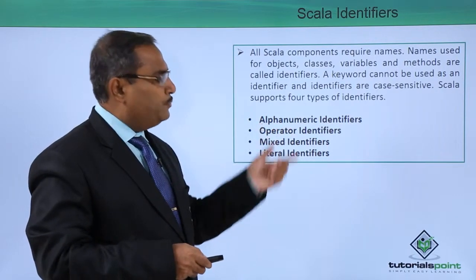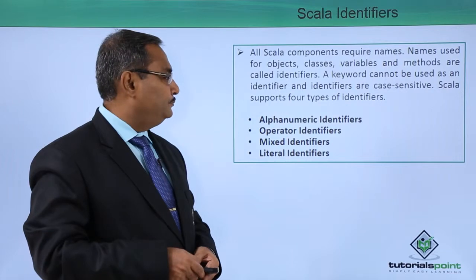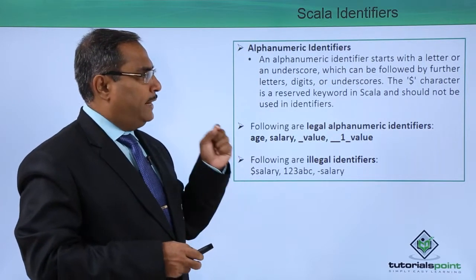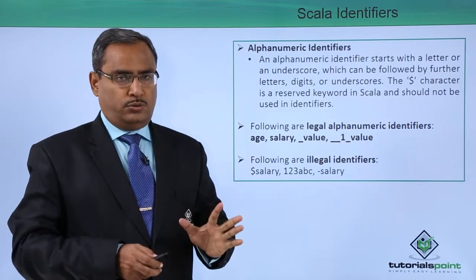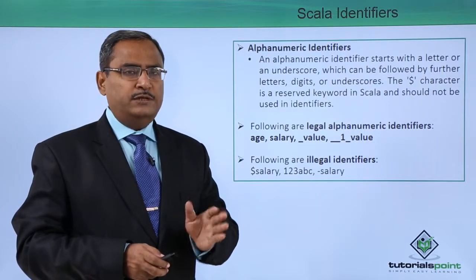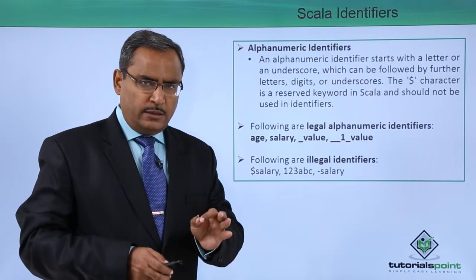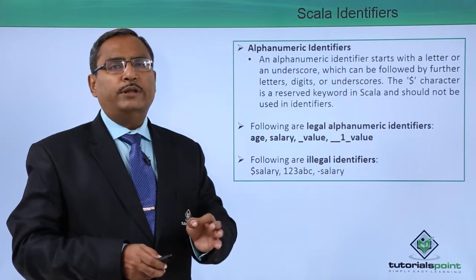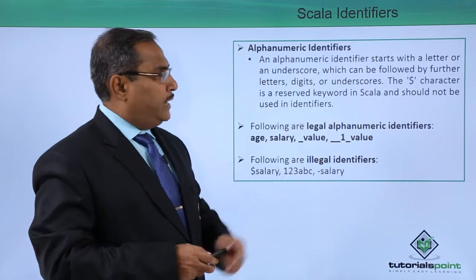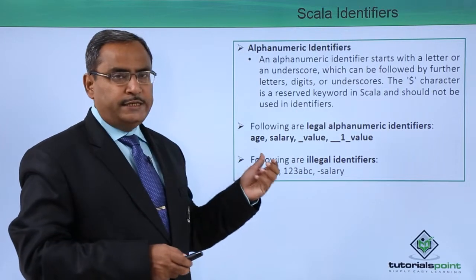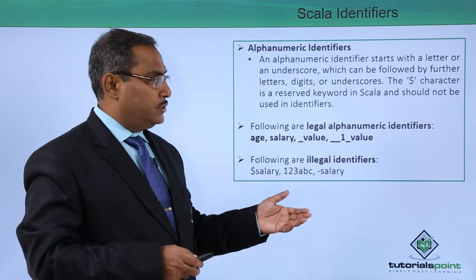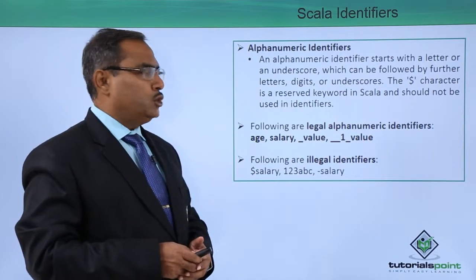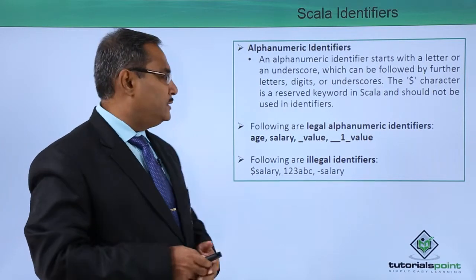First, let us look at alphanumeric identifiers. An alphanumeric identifier starts with a letter or an underscore — either a capital letter or a lowercase letter — or with one underscore, which can be followed by digits, letters, or underscores. The dollar character is a reserved keyword in Scala and should not be used in identifiers.